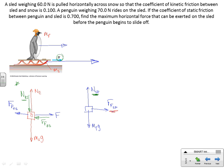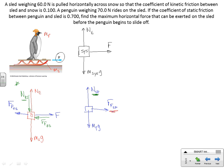The system free body diagram is the simpler one. For the system we have m_system times g, a normal force from the earth, and the applied force F — which acts on the sled, but since the sled is part of the system, it acts on the system. We know the sled's weight and the penguin's weight. The problem asks for the maximum force that can be exerted on the sled before the penguin starts to slip.